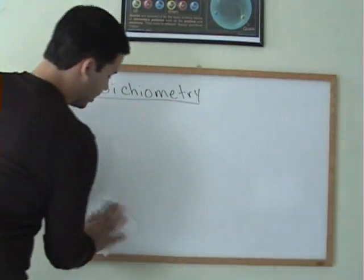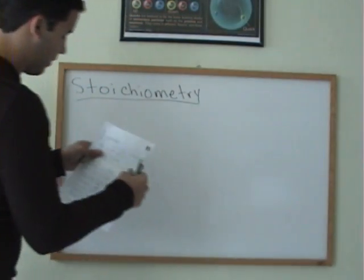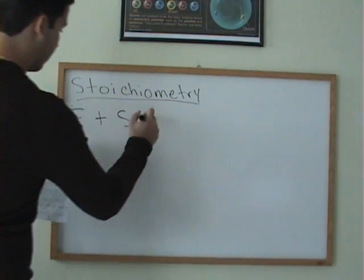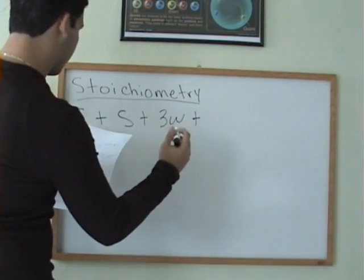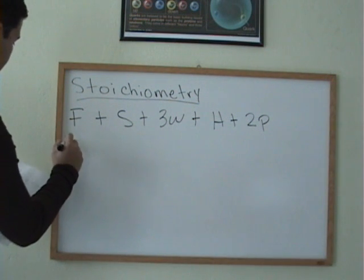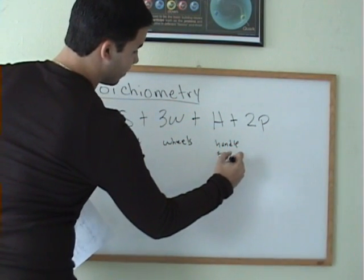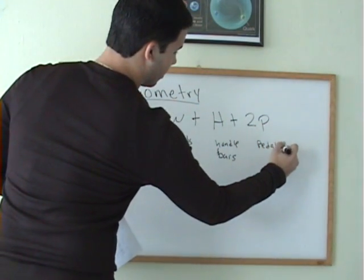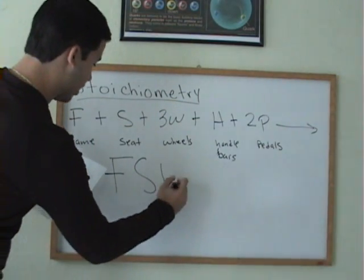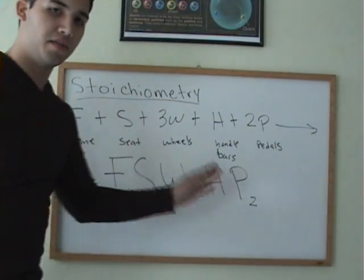My first example is going to deal with a real-life situation involving a tricycle. Let's say your tricycle has a frame, a seat, three wheels, one handlebar, and two pedals. When you're going to write this as an equation, you would write it like this: F, S, W3, H, P2. Notice that everything is balanced in our tricycle example.